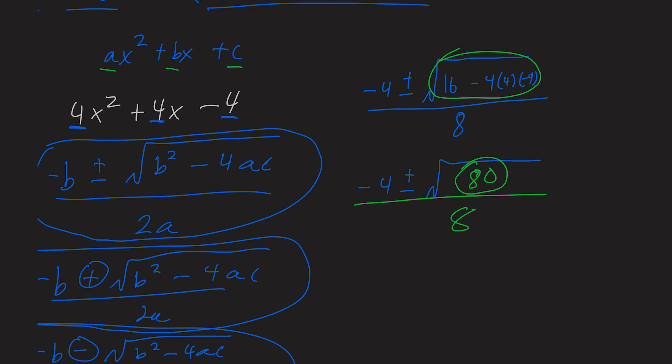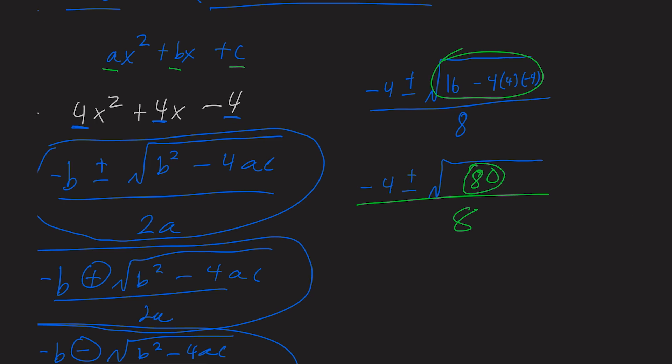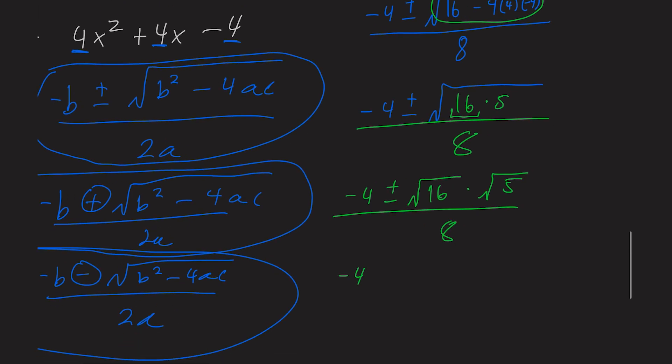So now our next step is to simplify what's inside of our radical. We need to factor our 80 into something that is a perfect square and something that isn't. So what multiplies to 80? We know that that is going to be 16 times 5, where we know 16 is a perfect square. So this can be rewritten as negative 4 plus or minus rad 16 times rad 5 all over 8. Which can now be rewritten as negative 4 plus or minus 4 times rad 5 all over 8.